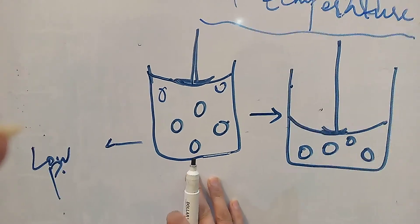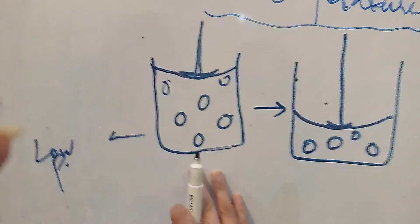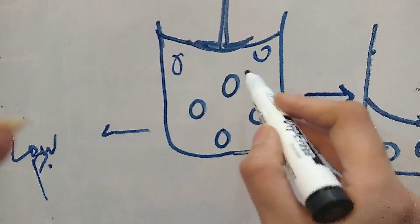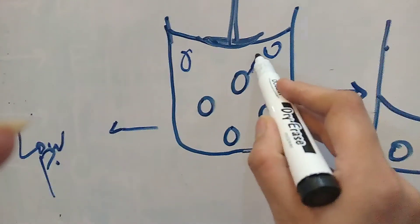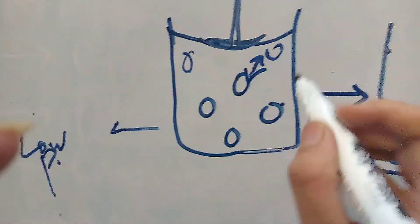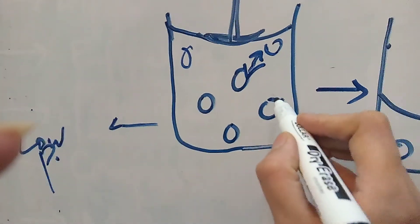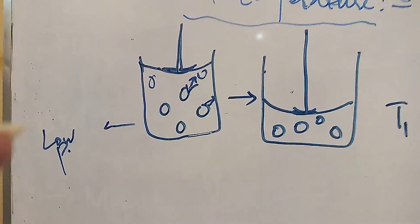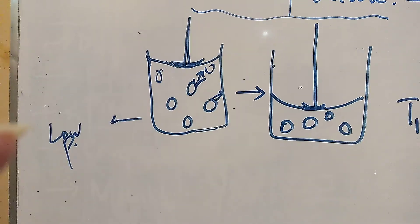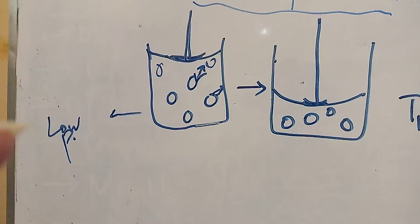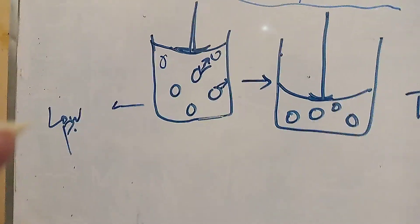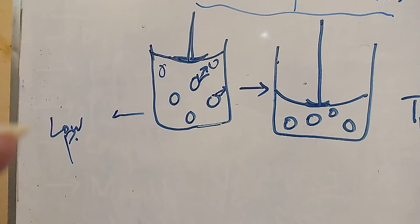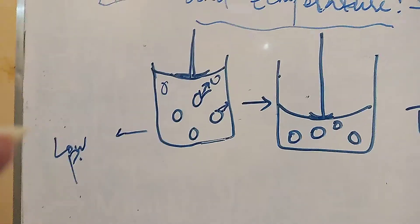According to kinetic molecular theory, gas molecules are in constant random motion. They collide with one another as well as with the walls of the container. The average kinetic energy of the gas is directly related to its temperature.